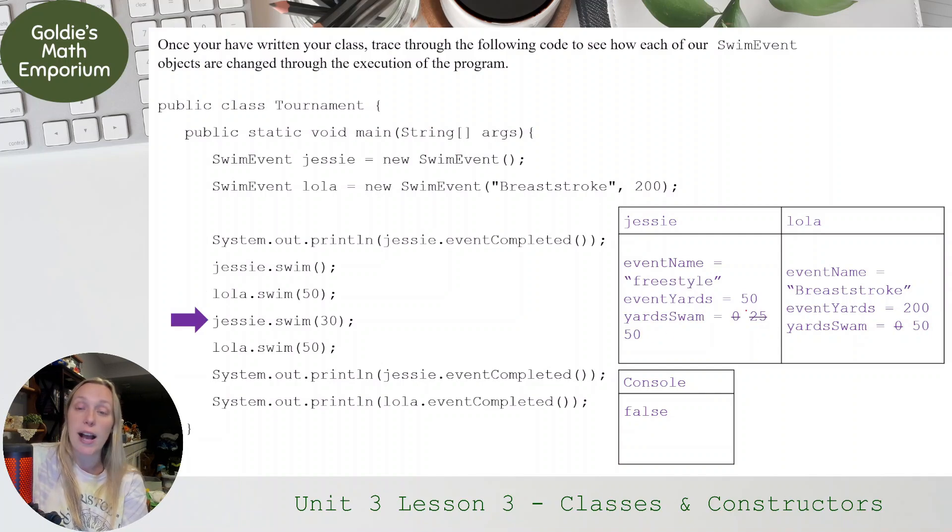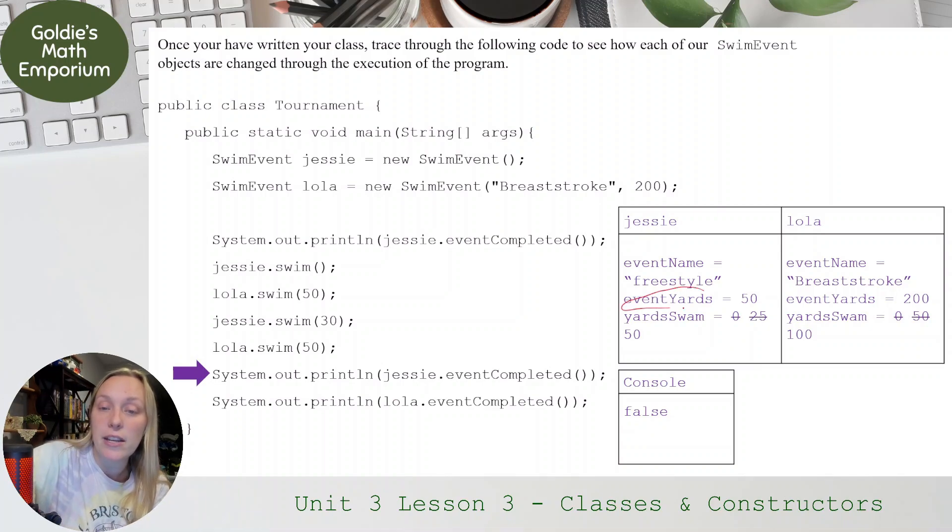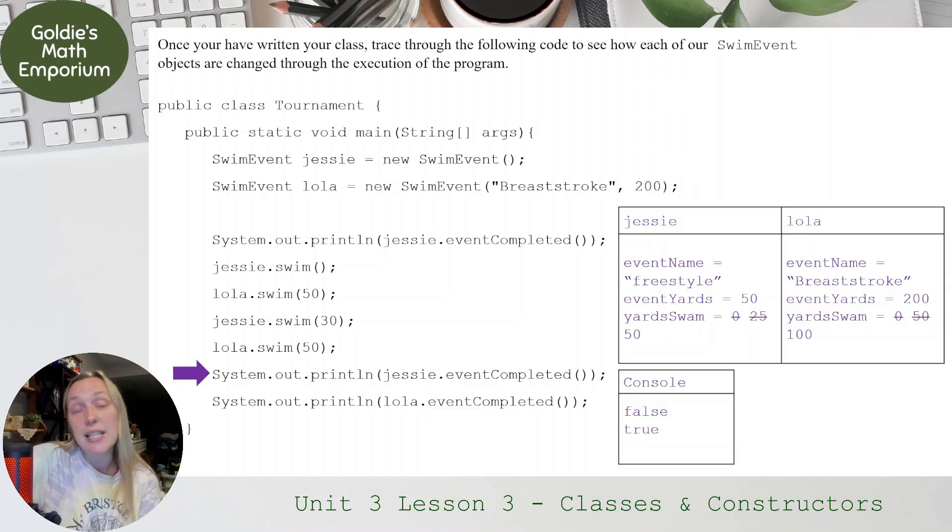Jesse gets 30 added to his. But what do you notice here? I didn't change that to 55. I didn't take 25 plus 30. And that was because if the yardsSwim plus yards, which is 30, if it was greater than 50, I just set yardsSwim equal to eventYards. So that's why yardsSwim just got 50. Lola swims another 50. So she's going to be at 100 yardsSwim. So now when I go to print off, is Jesse, has he completed the event? We check to see, is eventYards equal to yardsSwim? For Jesse, that's going to return true. For Lola, that is going to return false because eventYards and yardsSwim are not equal for Lola.